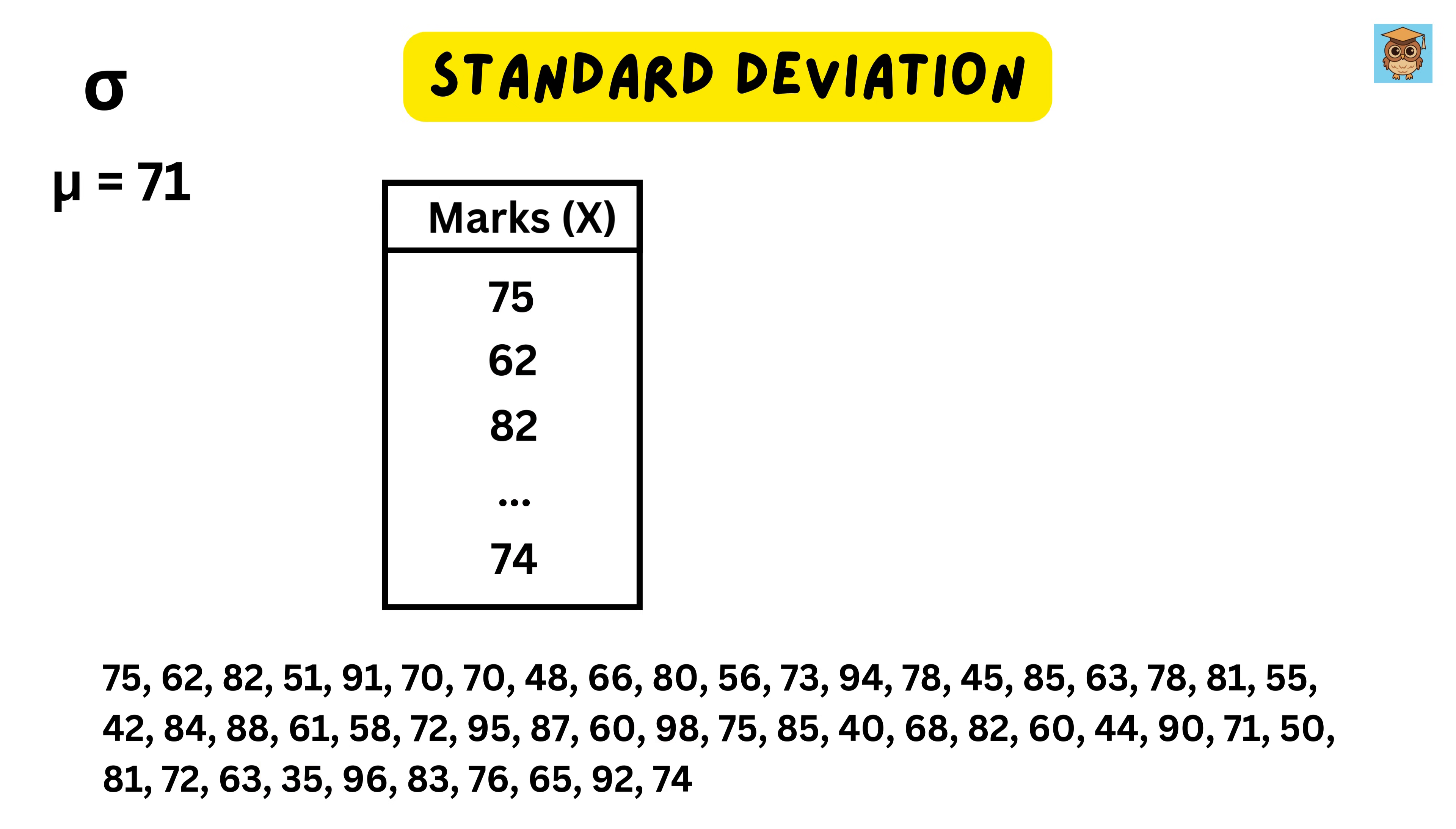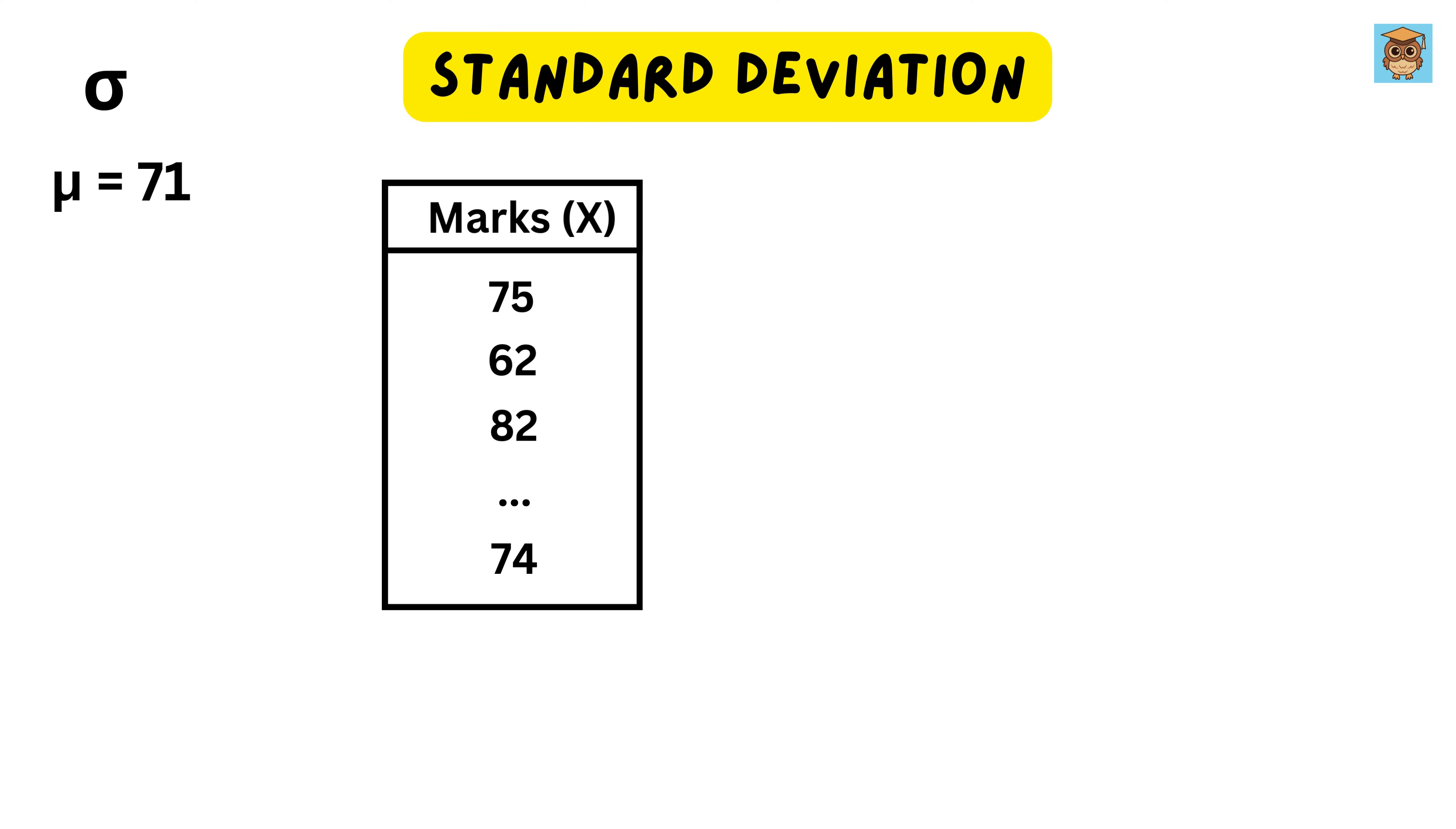Let's break it down step by step. First, list all the marks of the students in a table. For the next step, we will subtract the mean score of the class from the score of each student in the class. This tells us how far each score is from the average. So, for student number 1, this will be 75 minus 71, or 4. Then for student number 2, this will be 62 minus 71, or minus 9. Then for student number 3, it will be 82 minus 71, or 11, and so on.